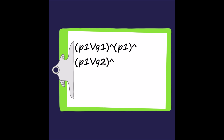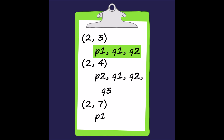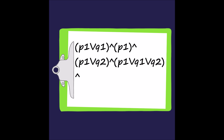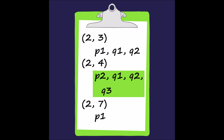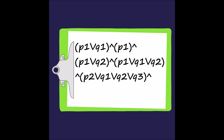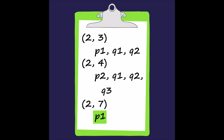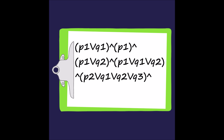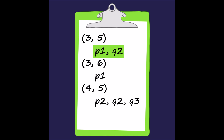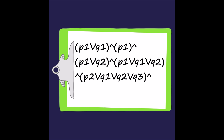Next, to keep tuples 2 and 3 distinct, we need P1 or Q1 or Q2. To keep tuples 2 and 4 distinct, we need P2 or Q1 or Q2 or Q3. To keep tuples 2 and 7 distinct, we need only P1. Since P1 already needs to be true because of tuples 1 and 5, we don't write it again. To keep tuples 3 and 5 distinct, we need P1 or Q2, which is already required from an earlier pair.